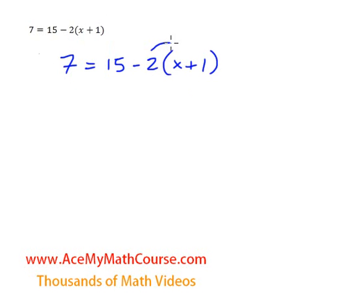Let's just distribute the negative 2. So we have 7 equals 15, negative 2 times x is negative 2x, negative 2 times 1 is negative 2.